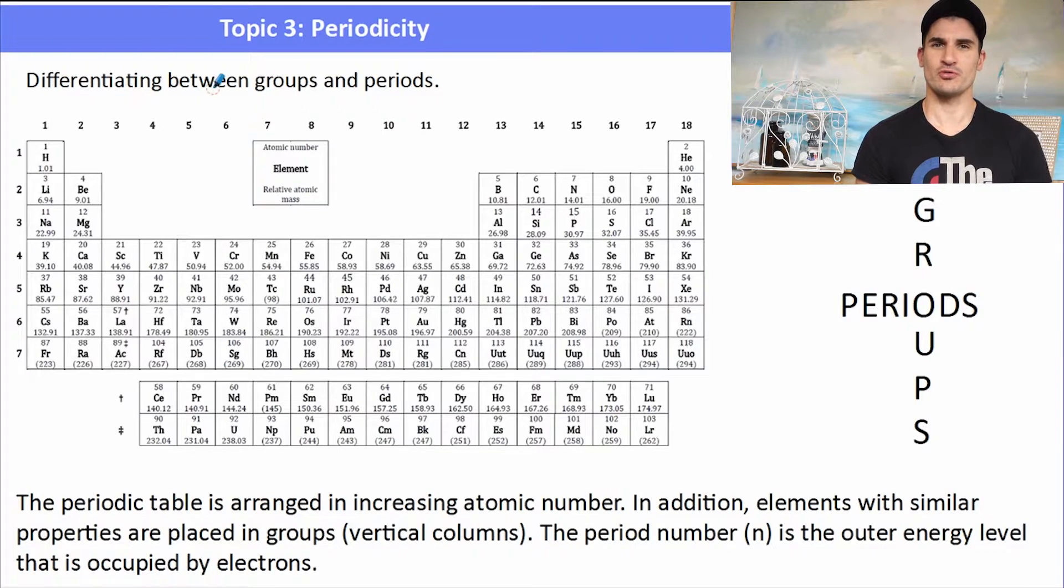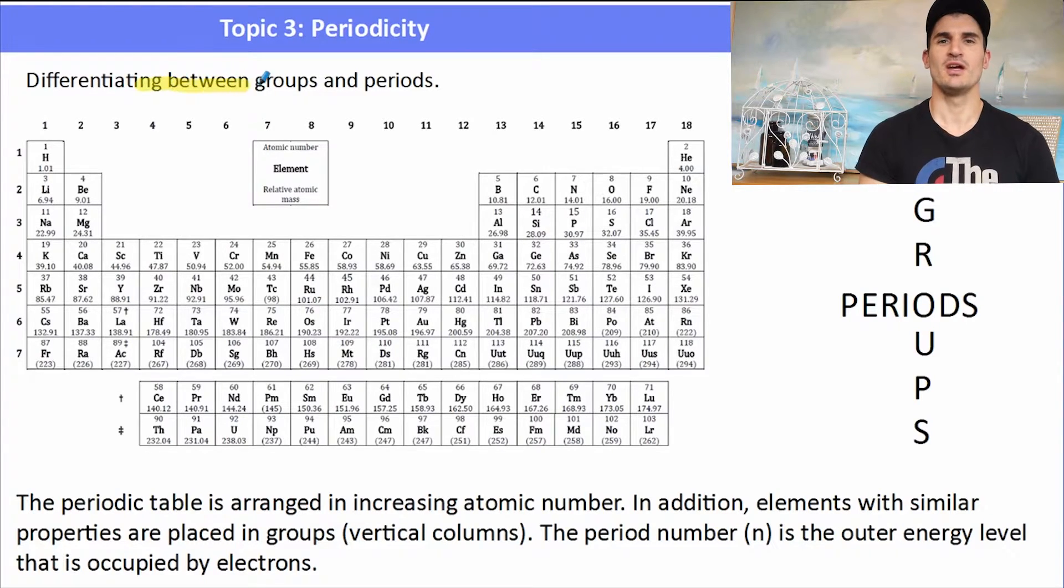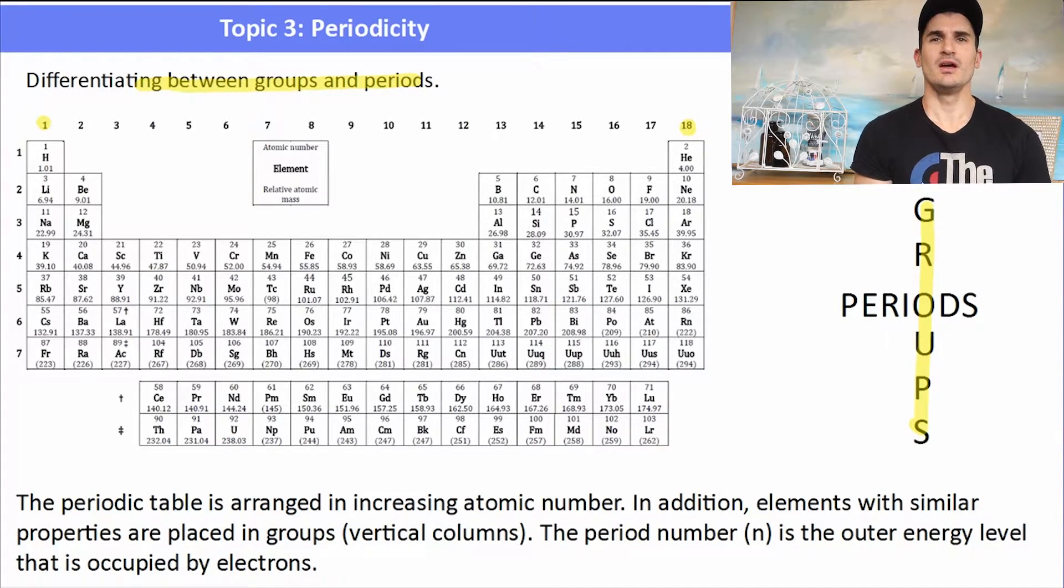Remember, the groups are the vertical columns of the periodic table, and the periods are the horizontal rows. So groups go down the periodic table and they're numbered 1 through to 18, and the periods are labeled 1 through to 7 and they run across the periodic table.